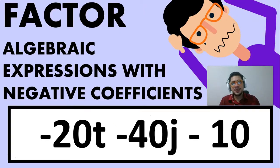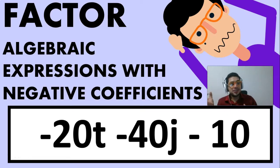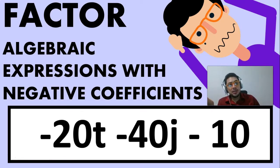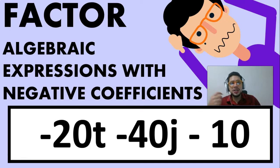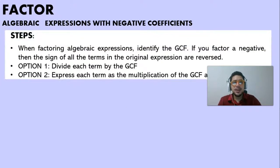Welcome to today's video in which we're going to be learning how to factor expressions with negative coefficients. We're going to be tackling the greatest common factor and the method in which we can use it through common division to express a common factor for a trinomial.